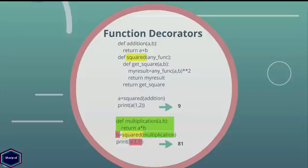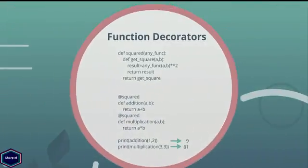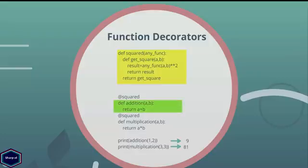Now you know what decorators are and why you need them. Python provides something more interesting — it allows you to simplify the usage of decorators using the @ symbol. Here I have my old squared function which takes a function as an argument. Inside my squared function I have the getSquare function which calls any_func. I didn't change anything in the squared function. Now for my addition function, before defining it I write the name of the decorator starting with the @ symbol. So it is the same as writing addition = squared(addition). Now in main I can call my addition function, and similarly I can rewrite my multiplication function.